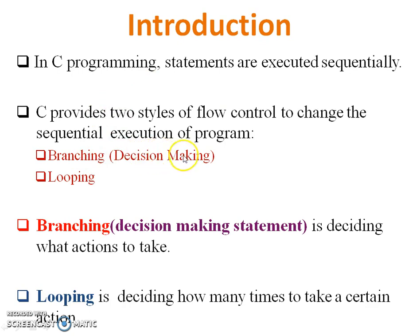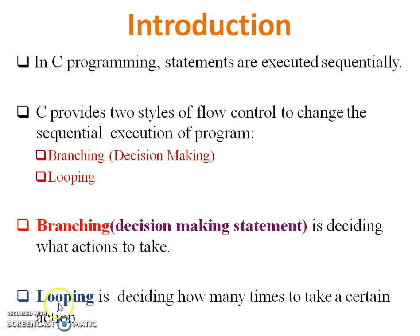The two styles of flow control are: first, branching — also called decision-making — and second, looping. Both are totally different. Branching means a decision-making statement that decides what action to take based on whether a condition is true or false. Looping decides how many times to take a certain action based on a given condition.